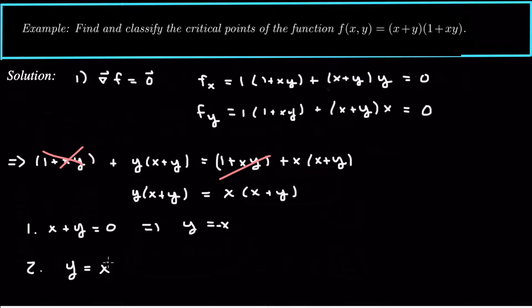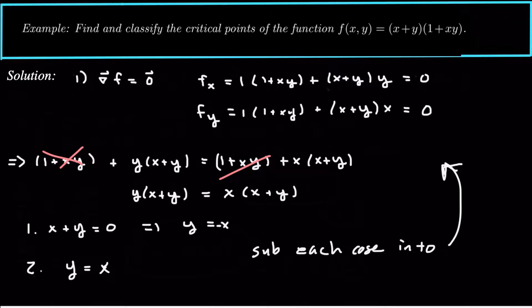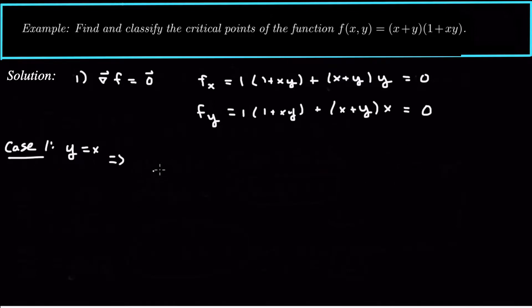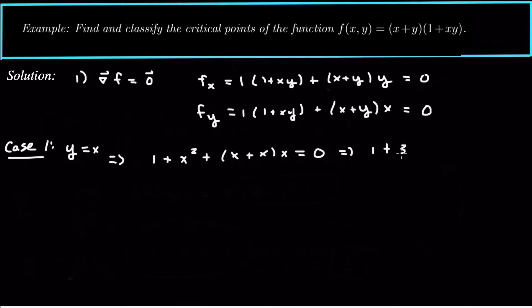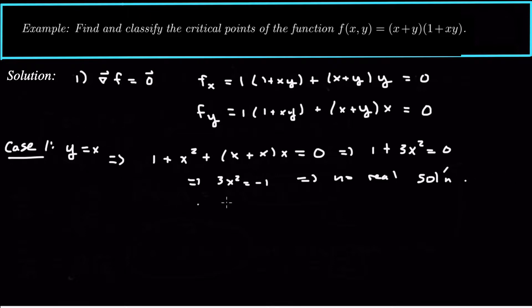We've got two variables and we want to eliminate one. In both cases we have y solved in terms of x, so we take each case and substitute back into one of the original equations. Case one: y equals x. Substituting into f sub x equals zero gives 1 plus x squared plus x plus x times x equals zero, or 1 plus 3x squared equals zero. This has no real solutions since x squared can't equal a negative number, so case one gives only imaginary solutions.